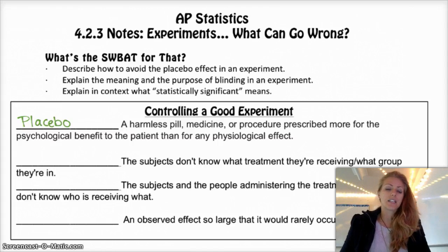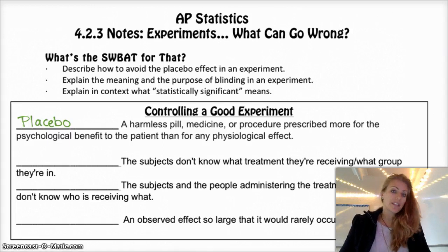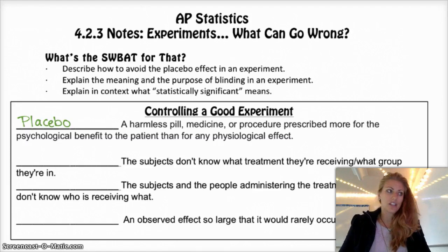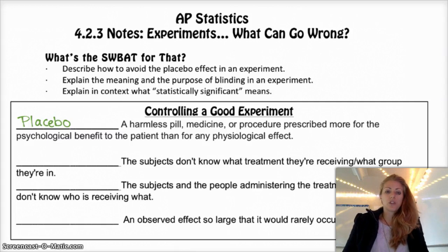The second vocab word for today is a single blind study. This is a study in which the subjects don't know what treatment they're receiving or what group they're in. Typically you want this because if you know you're getting the real pill or the placebo pill, it totally eliminates the placebo effect. So usually you want at least a single blind experiment.